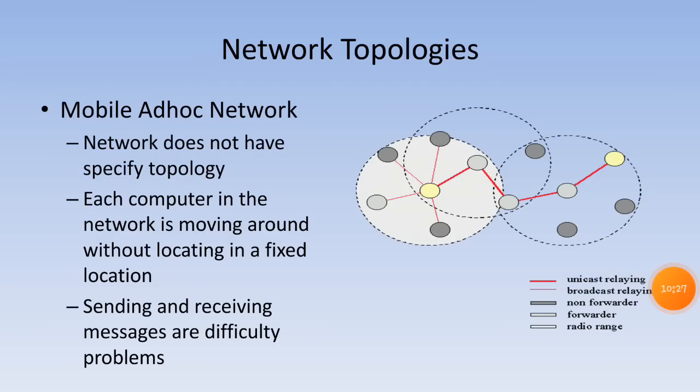In a mobile ad hoc network, the network does not have a specified topology. Each computer in the network is moving around without being located in a fixed position, making sending and receiving messages a difficult problem.